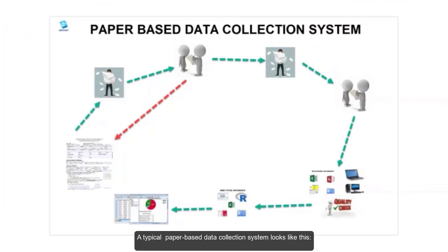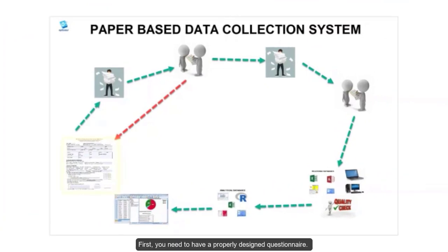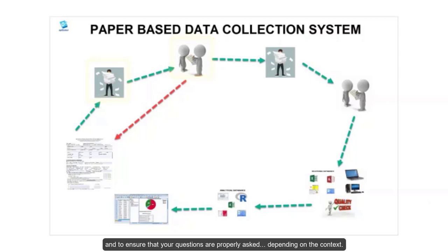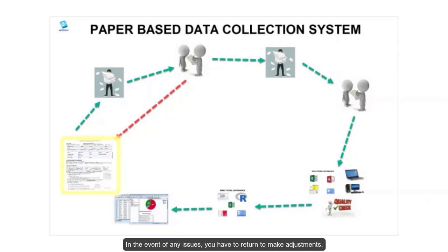A typical paper-based data collection system looks like this. First, you need to have a properly designed questionnaire. Then, you will have to print and test your questionnaire to identify any possible errors and to ensure that your questions are properly asked, depending on the context. In the event of any issues, you have to return to make adjustments.